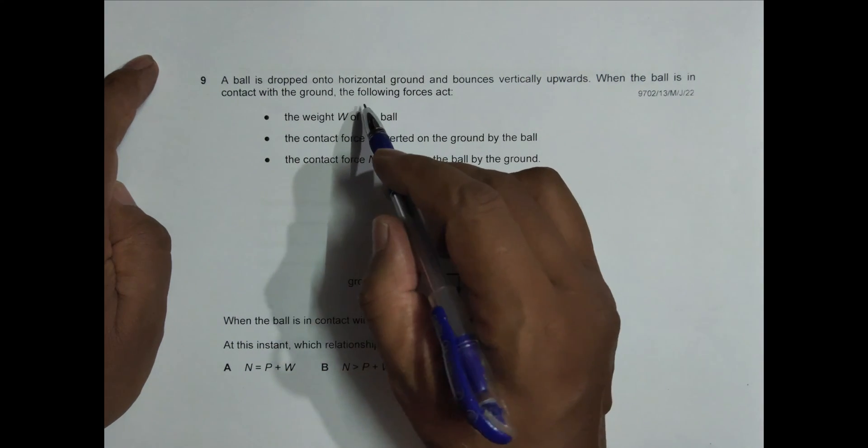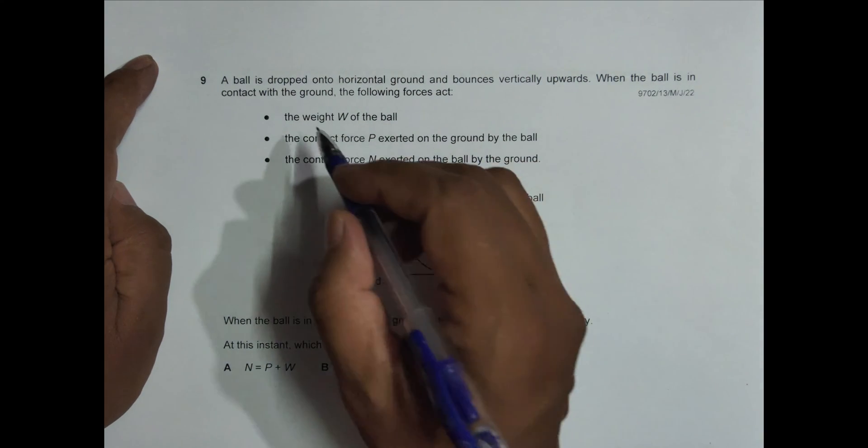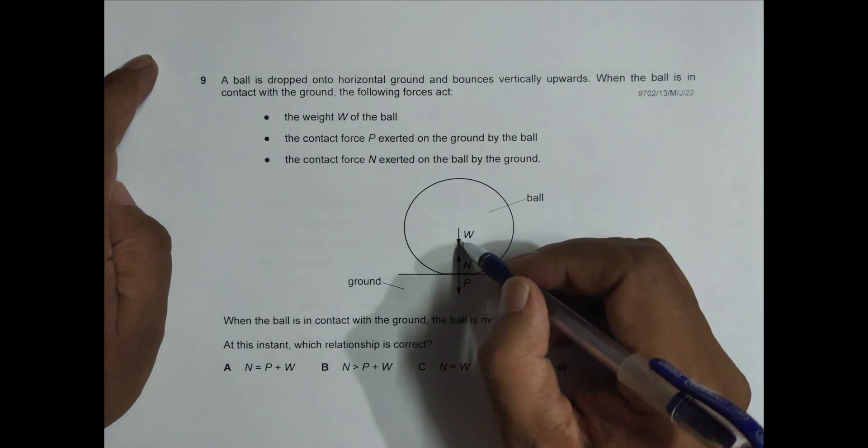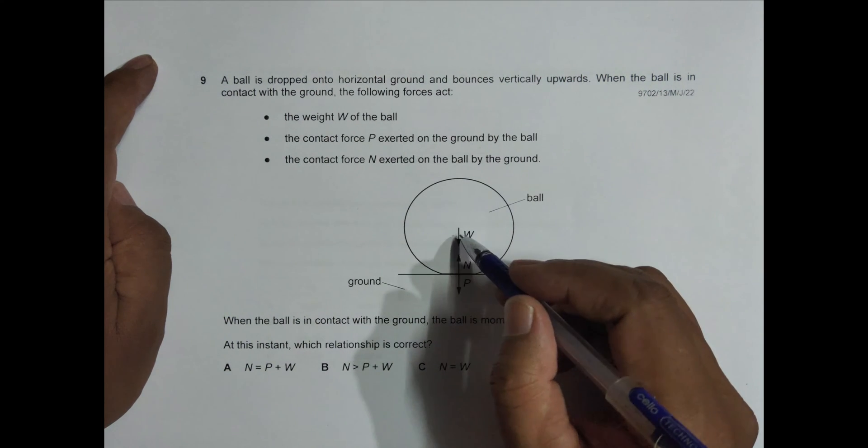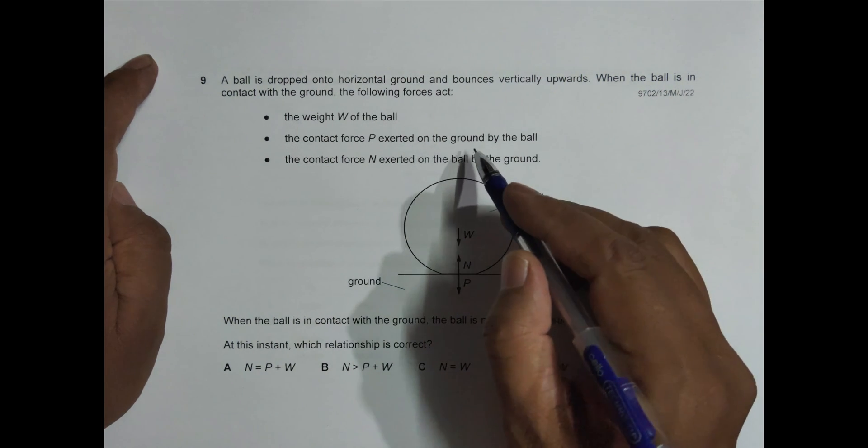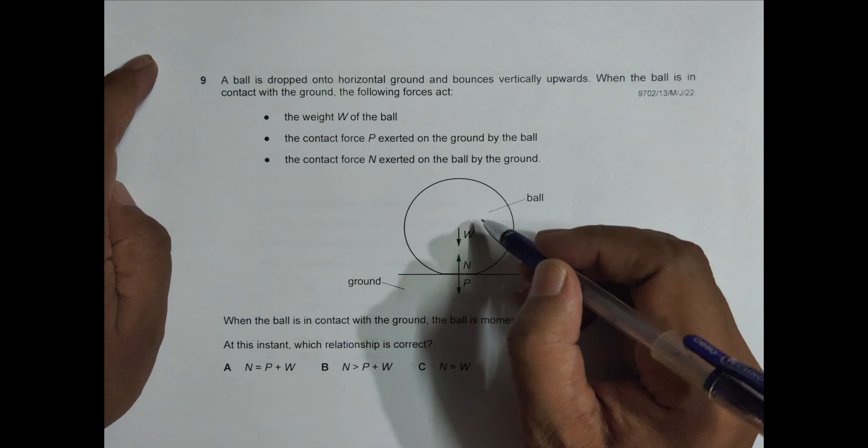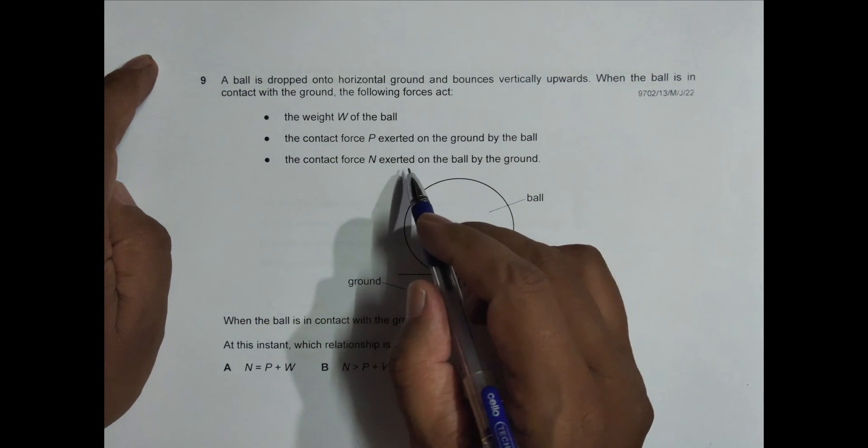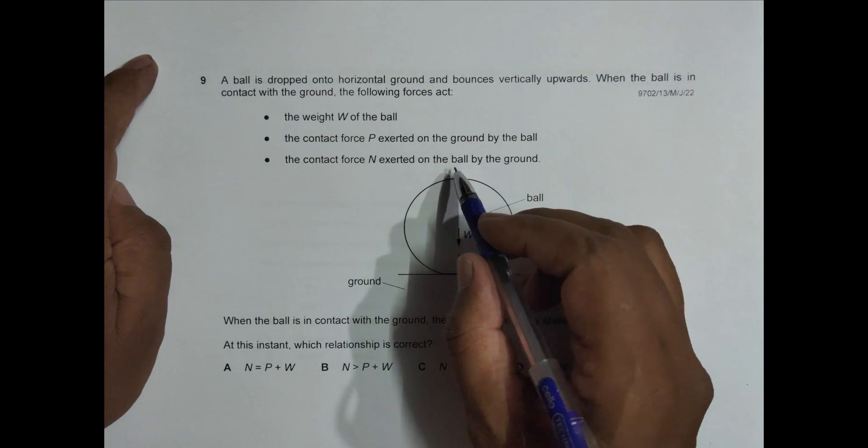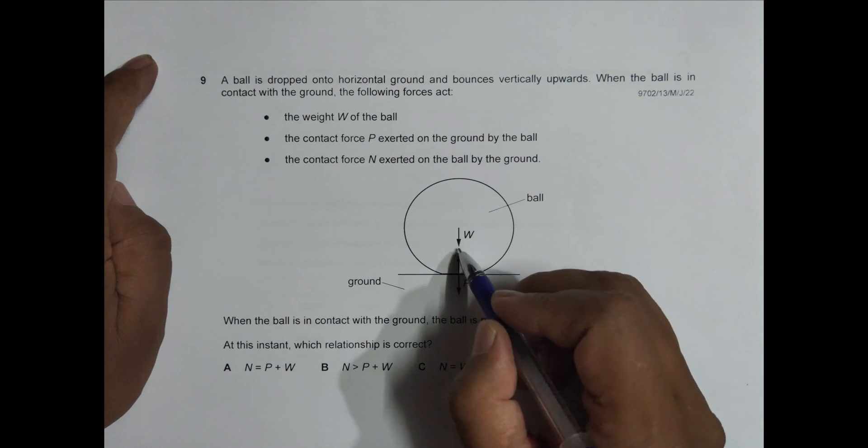The following forces act: one is the weight of the ball, of course it acts downward. Then there is the contact force P exerted by the ball on the ground, it is P. And the contact force N is by the ground on the ball, like this.